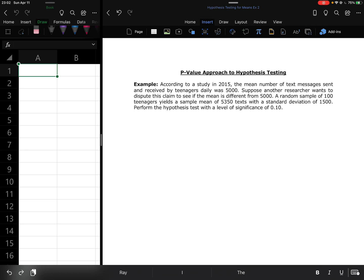Another researcher wants to dispute this claim to see if the mean is different from 5000. A random sample of 100 teenagers yielded a sample mean of 5350 texts with a standard deviation of 1500. Perform the hypothesis test with a level of significance of 0.10.